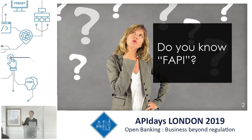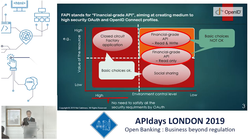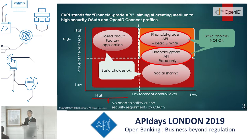So I probably need to explain a little bit before coming to the new developments. You know OAuth and OpenID Connect? Good. So FAPI basically stands for Financial Grade API, and it is an OAuth and OpenID Connect profile which aims to serve medium to high security applications.